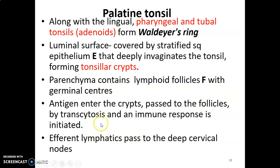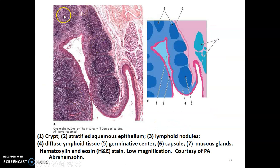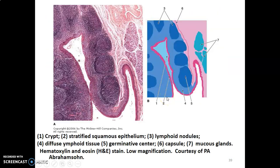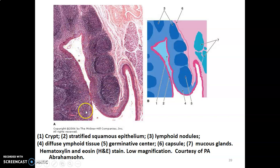In the histological image of a palatine tonsil, you can identify: number one, a tonsillar crypt; number two, stratified squamous epithelium; number three, a lymphoid follicle with an inner germinal center; and number six, the surrounding capsule. Mucus glands are also visible around the tonsil. The stratified squamous epithelium invaginates to form the crypts, with lymphoid follicles beneath.